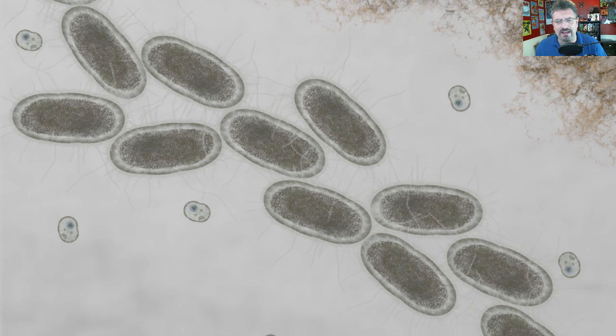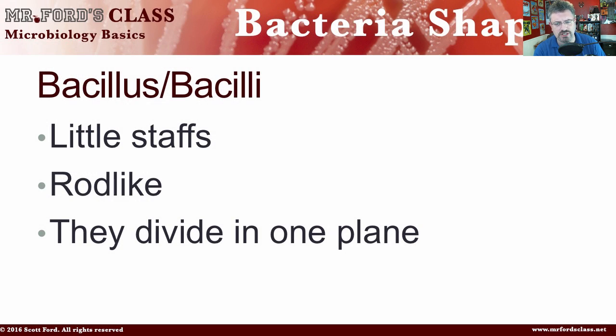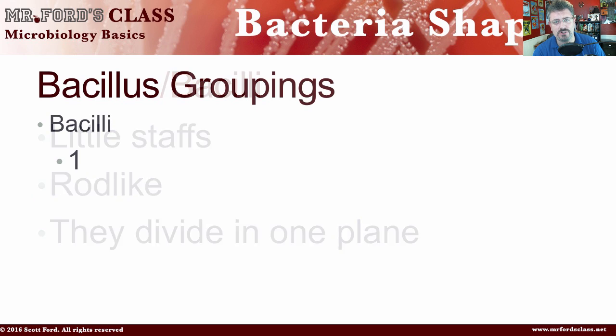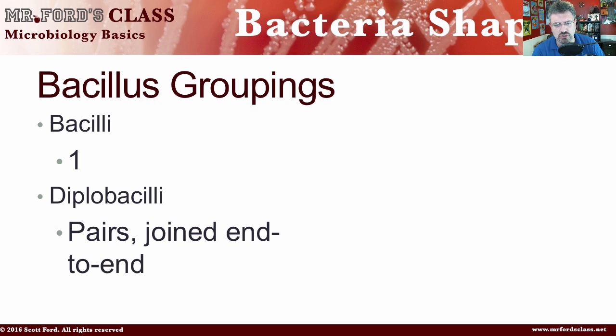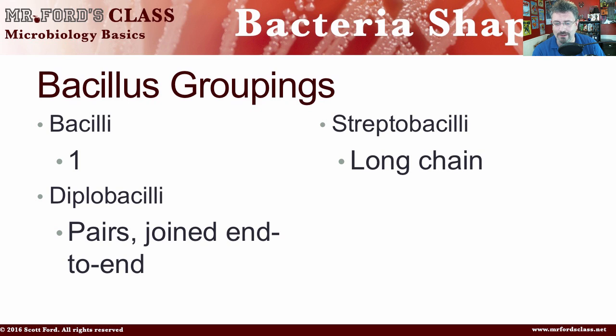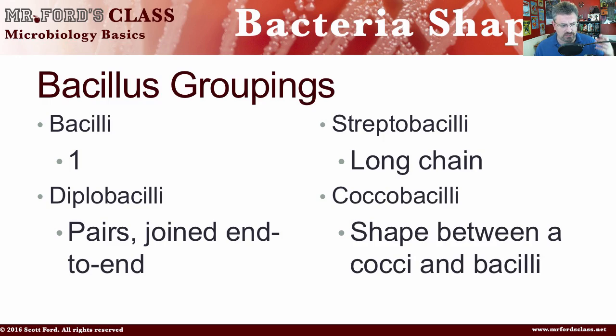Moving to the next one: the bacilli, or the bacillus. These are little staffs — rod-shaped — and they divide in one plane. We have groupings of these as well. We have the bacillus, which is just one. Then diplobacilli, which is pairs joined end-to-end. Then streptobacilli, which is a long chain — remember, strep is chain-like. And then coccobacilli, which is a shape somewhere in between cocci and bacilli.